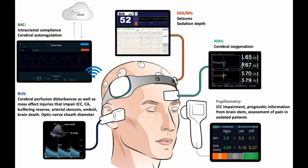To summarize, these are the five main non-invasive monitors. First, brain ultrasound helps assess perfusion of the brain. Second, EEG or BIS helps measure seizures and sedation depth. Third, pupillometry measures pupillary size, reaction, and provides an index for assessing brain function. Fourth, intracranial compliance monitoring shows cerebral autoregulation and, using cloud technology, provides an ICP value. Finally, NIRS for cerebral oxygenation guides therapy to improve brain oxygenation and prevent secondary damage due to hypoxemia.